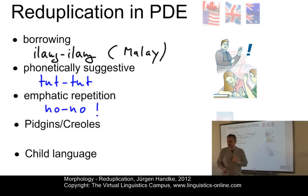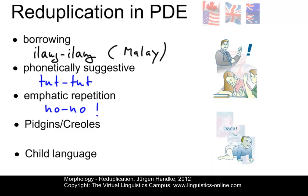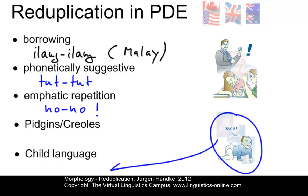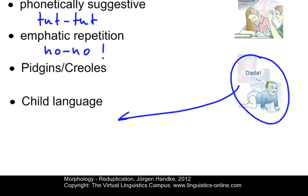We may also have examples from pidgins and creoles — we'll come back to that. First, let's turn to child language. Young children very often use reduplicated forms like dada, which is daddy, or bobo. So here we have total reduplication. The major motivation for children to produce reduplications may simply be the need to play with sounds and to practice them — a sort of phonetic practice for them.